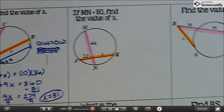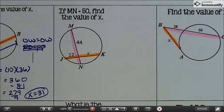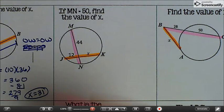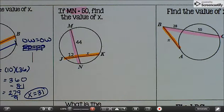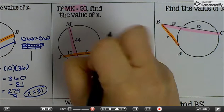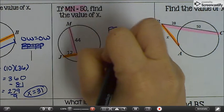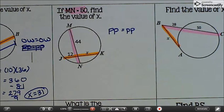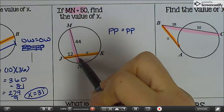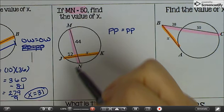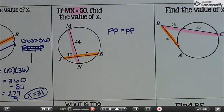Alright, this one is very similar. If MN is 50, find the value of x. So I want you to go ahead and decide what kind it is, so pause the video, decide what kind it is, check back. Okay, hopefully you got that right. And now what I'd like you to do is figure out the length of this piece, just this little segment right here that we're going to need to use. So pause and come back and figure that out.